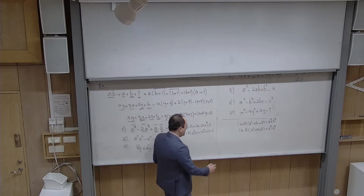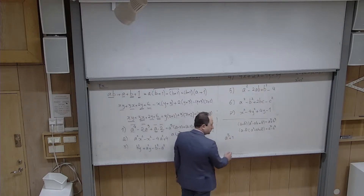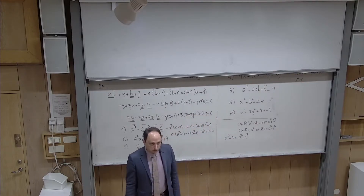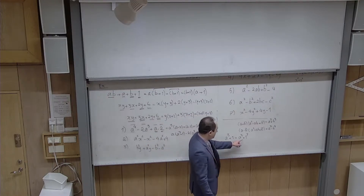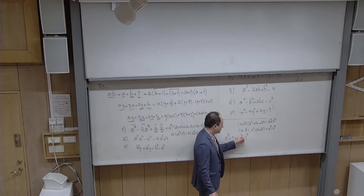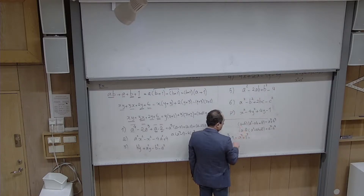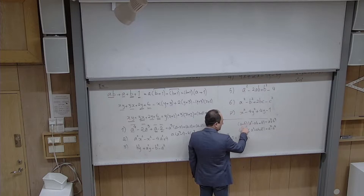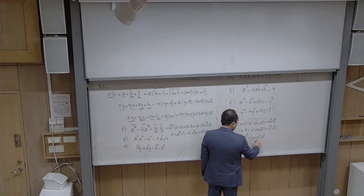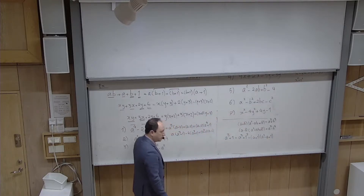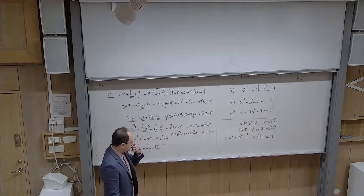For problem 3: b²y + a²y − b² − a². Grouping the first two and last two terms: from b²y + a²y I factor y out, giving y(b² + a²). From −b² − a² I pull a minus sign out, giving −(b² + a²). Now (b² + a²) is common. Pulling it out: (b² + a²)(y − 1). Can we continue? No — b² + a² is the sum of two complete squares, so just leave it.